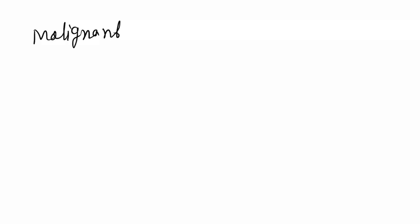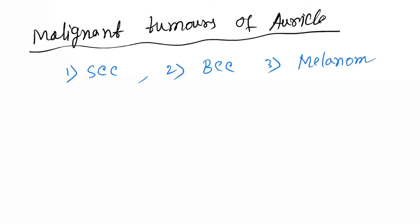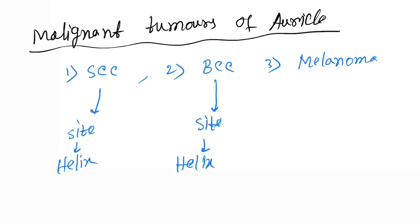Now moving to the malignant tumors of the auricle. There are three: first is squamous cell carcinoma, second is basal cell carcinoma, and third is melanoma. Squamous cell carcinoma is sited on the helix. Basal cell carcinoma is sited on the helix and tragus. Please see the clinical pictures in your textbook.